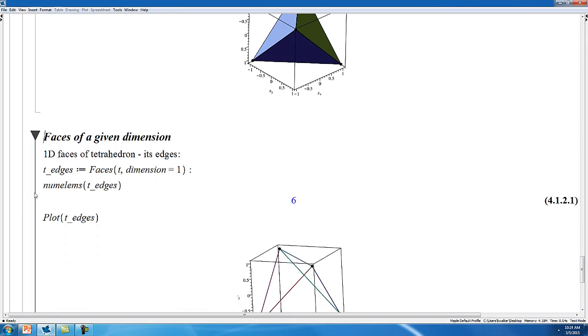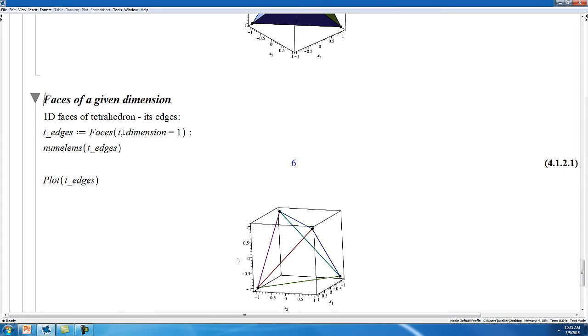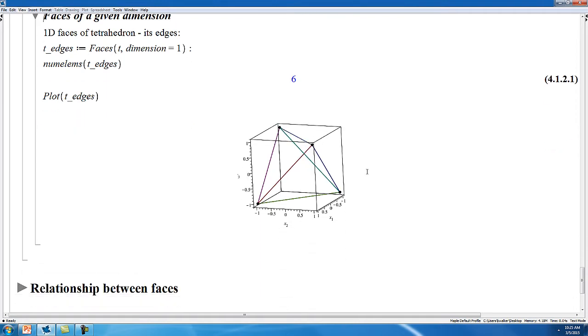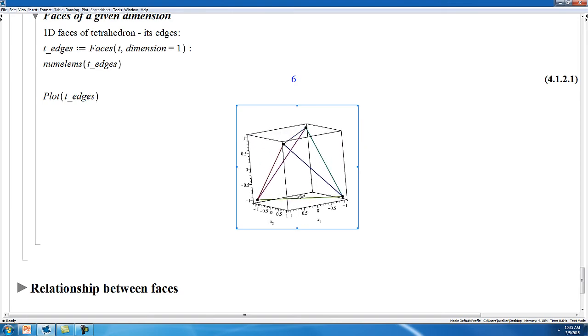You can also query for faces of a given dimension. So for the tetrahedron, for example, you can ask for all of its one-dimensional faces, and this corresponds to its edges, and the tetrahedron has six edges. Plotting the tetrahedron, you get a skeleton of its outline.